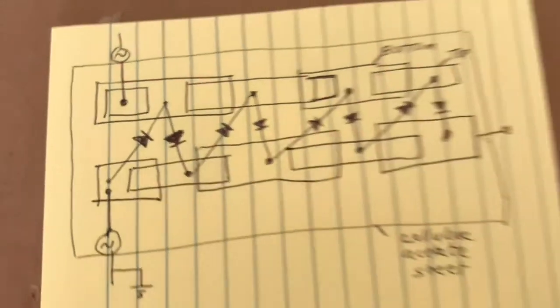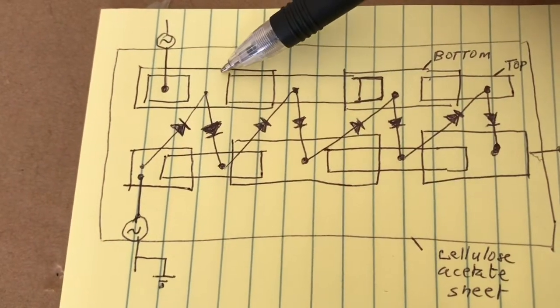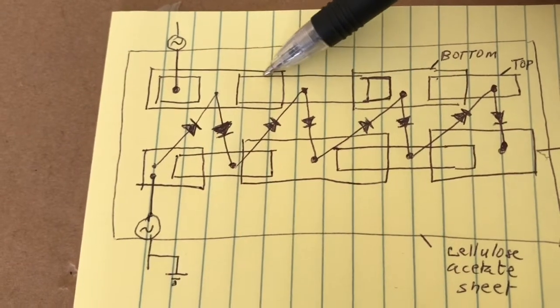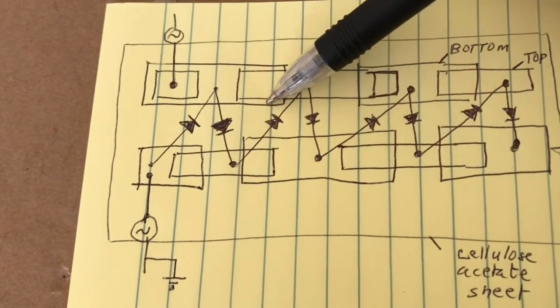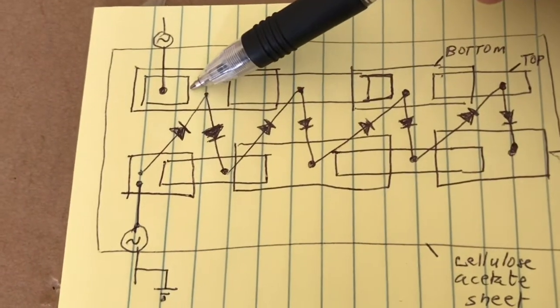Basically what I've drawn here is aluminum foil. The bigger ones you have to imagine that they're stuck to the bottom of the acetate sheet and the smaller ones you have to imagine that they're stuck to the top of the acetate sheet.